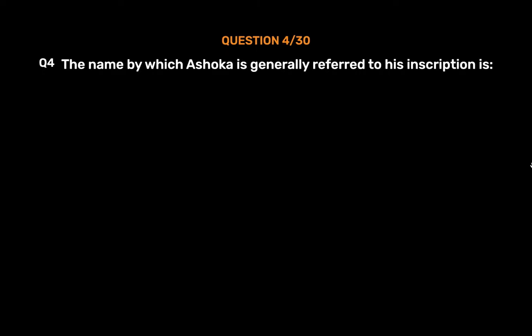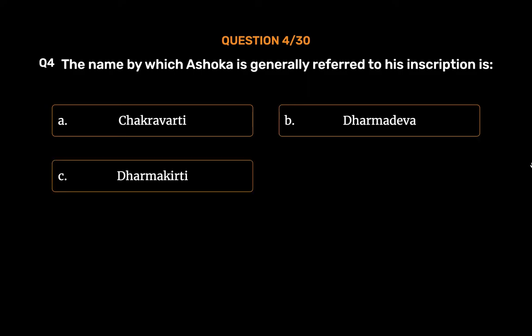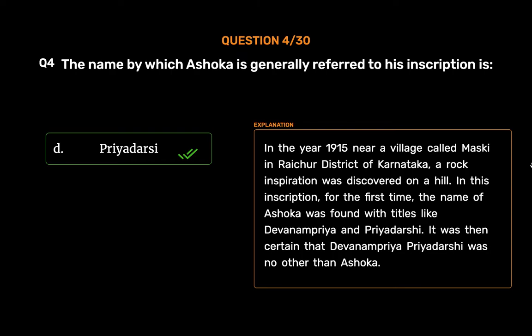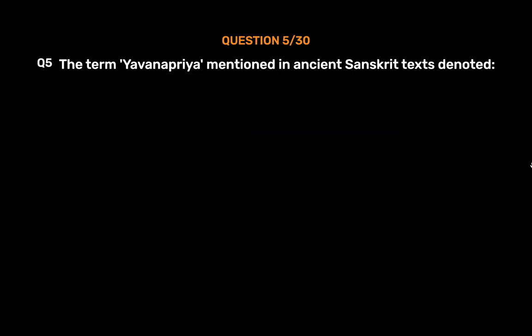Question number four: The name by which Ashoka is generally referred to in his inscriptions is — Option A: Chakravarti, Option B: Dharma Deva, Option C: Dharmakirti, Option D: Priyadarshi. The correct answer is Option D. In 1915, near a village called Maski in Raichur district of Karnataka, a rock inscription was discovered. In this inscription, for the first time, the name of Ashoka was found with titles like 'Devanamapriya' and 'Priyadarshi,' confirming that Devanamapriya Priyadarshi was none other than Ashoka.